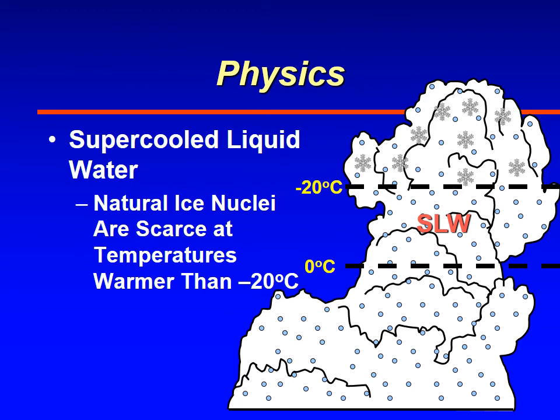Research has found that ice nuclei don't really start working until temperatures colder than minus 20°C. However, there are man-made ice nuclei — you've probably heard of silver iodide — which works at around minus 12°C. That's why we seed clouds with silver iodide: it starts the ice process at a much warmer temperature. Minus 12 is a lot warmer than minus 20. Natural ice nuclei are present throughout the atmosphere at temperatures of plus 10 or plus 20°C, but they don't start working until colder than minus 20°C.